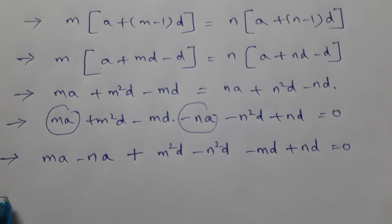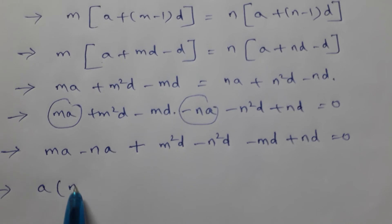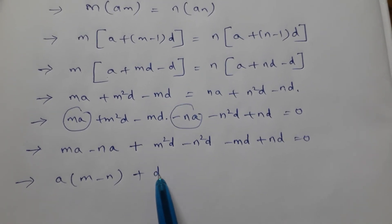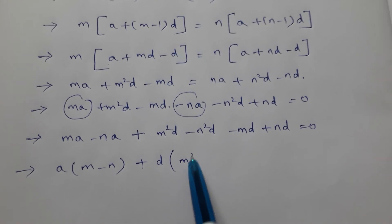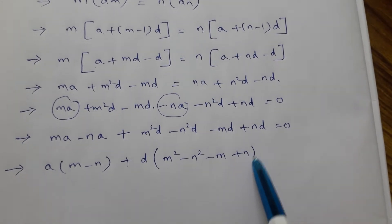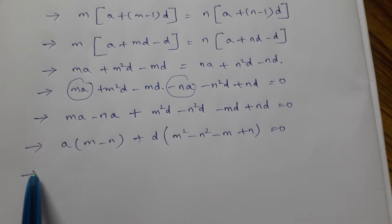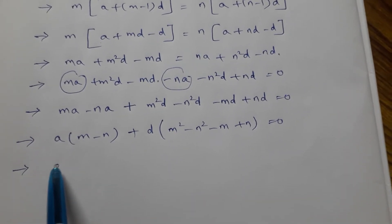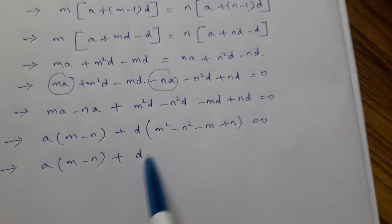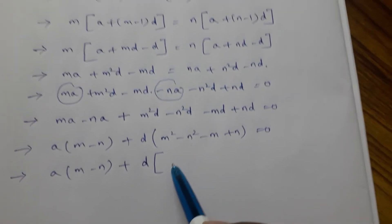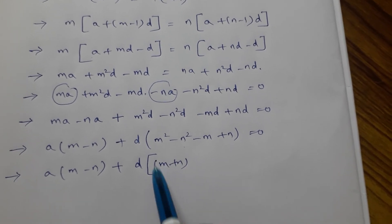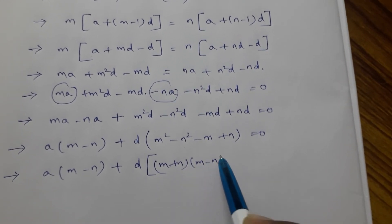In the first two terms, take 'a' common to get a(m minus n). In the remaining terms, take 'd' common to get d times (m² minus n² minus m plus n). Note that m² minus n² is in the form (a+b)(a−b), so it becomes (m+n)(m−n).